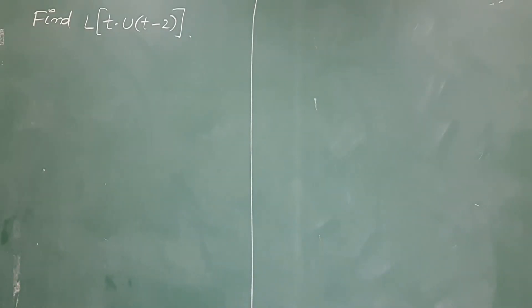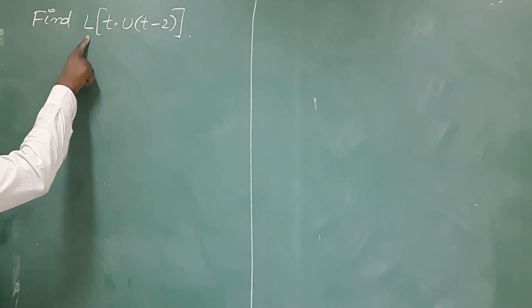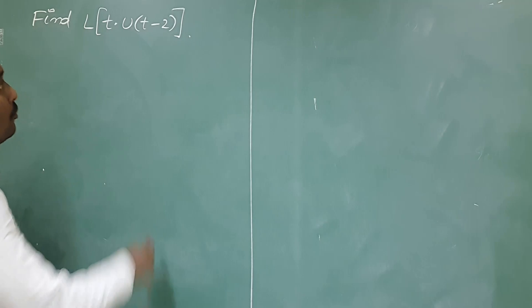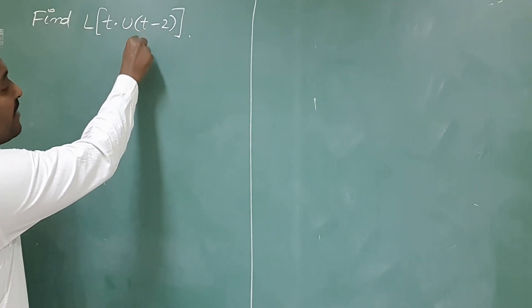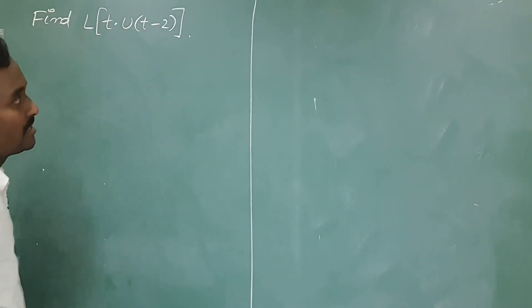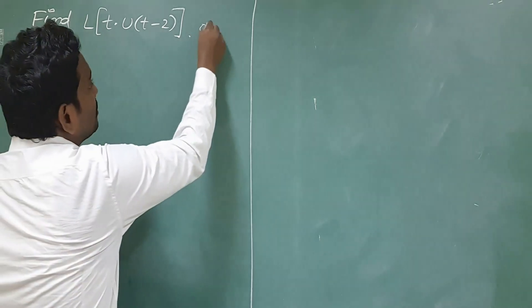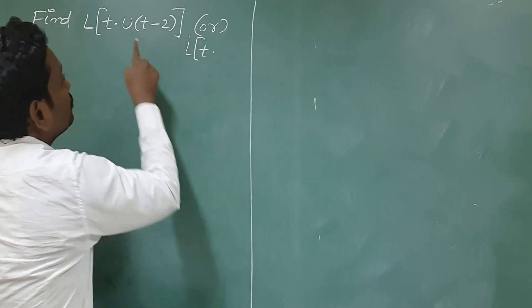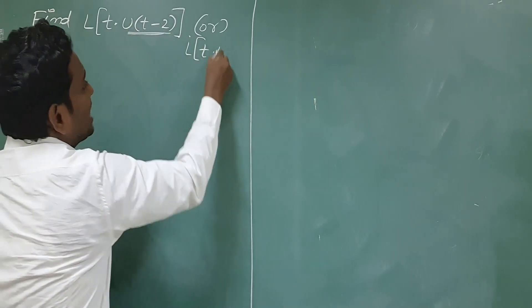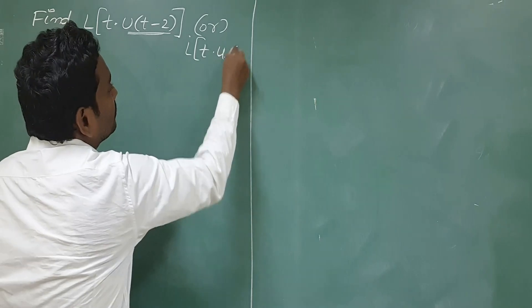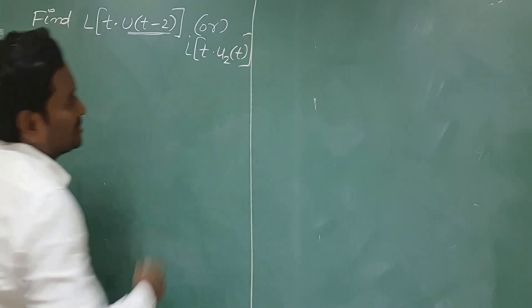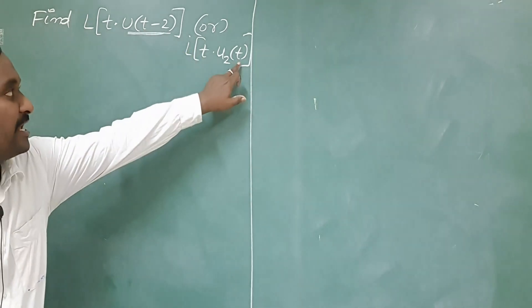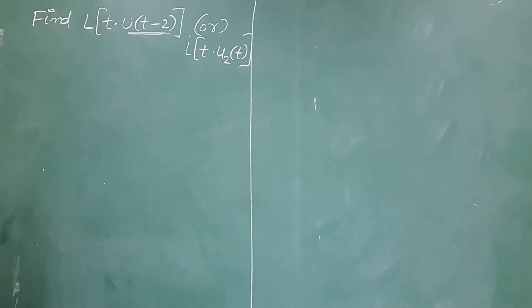Next example: Find the Laplace transformation of t · u(t - 2). Note that u(t - 2) is also represented as u₂(t), meaning the unit step function at point 2. This is the same as u(t - 2).